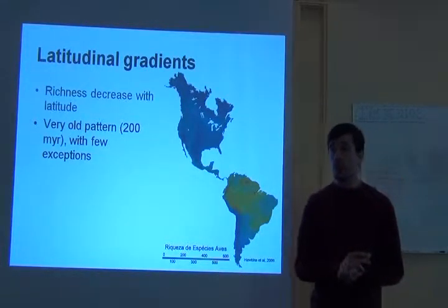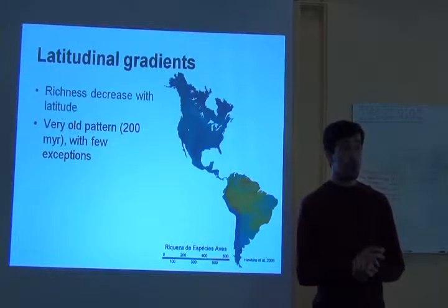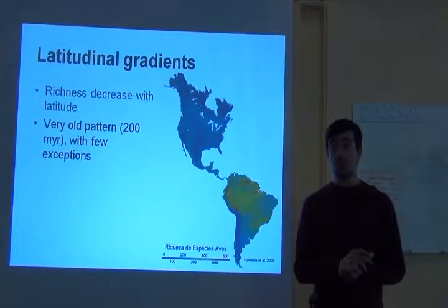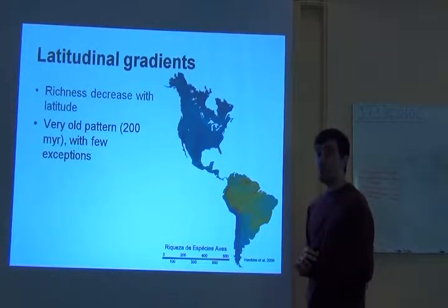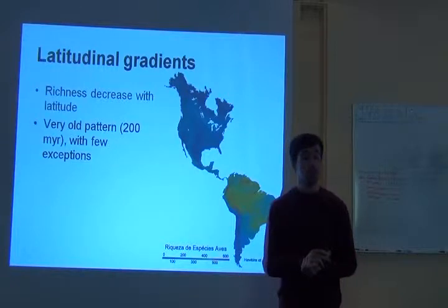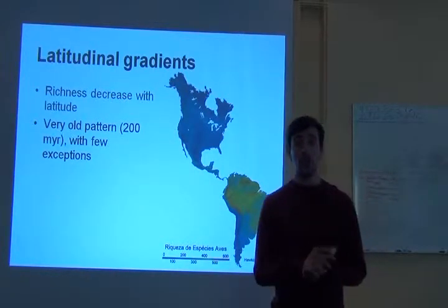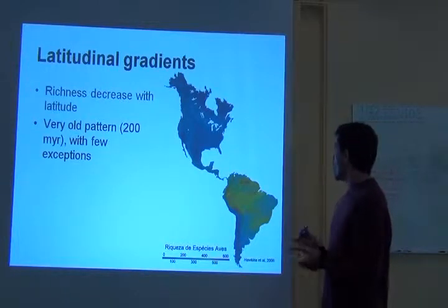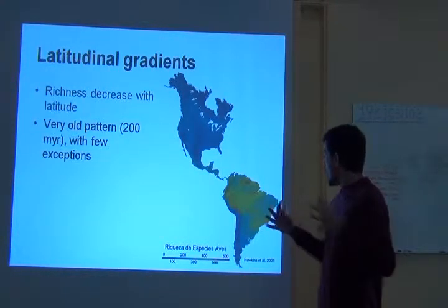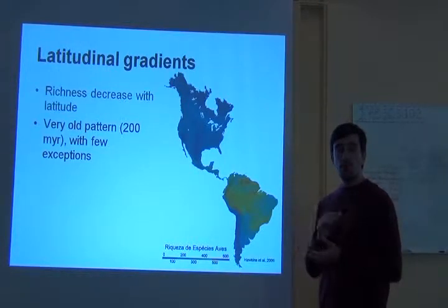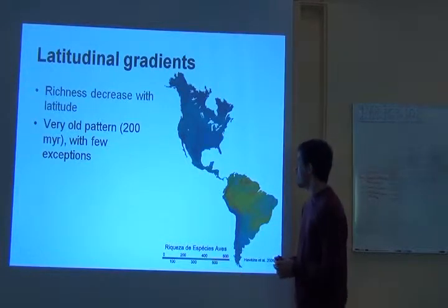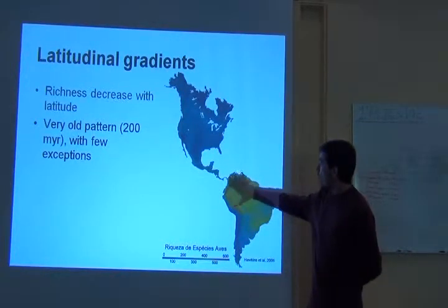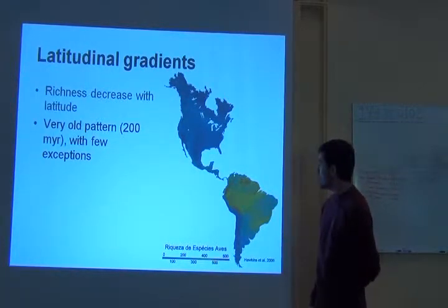There are very few exceptions to this pattern. Of course there are groups of species that are specialized in temperate climates, but compared to the total number of species we know, these are definitely exceptions. When you lump a large group of species and map species richness in space, you usually find a concentration of species in tropical areas.